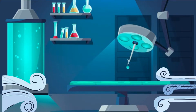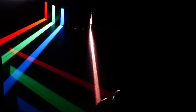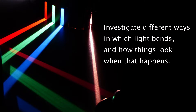Investigating how light moves through warm air can be hard to do in a classroom. You can, however, investigate how light bends using water and air. In the next few activities, we will investigate different ways in which light bends and how things look when that happens.